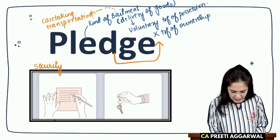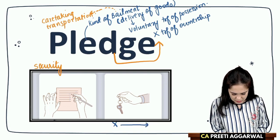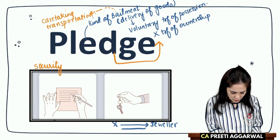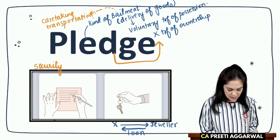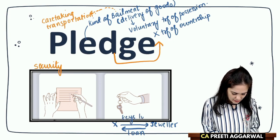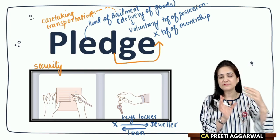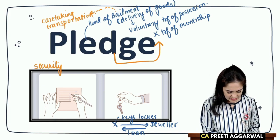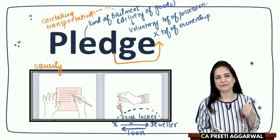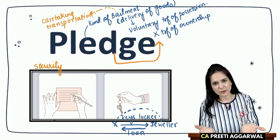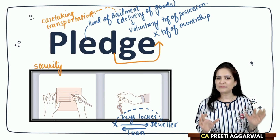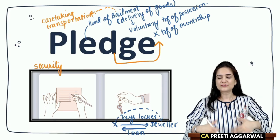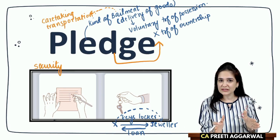For example, X went to a jeweller and requested a loan. The jeweller said he would give a loan but needed security. X gave the keys to his locker containing jewellery and obtained the loan. Giving the keys is like giving the jewellery. In pledge, we are not merely delivering the goods or transferring possession — we are delivering the goods as security.